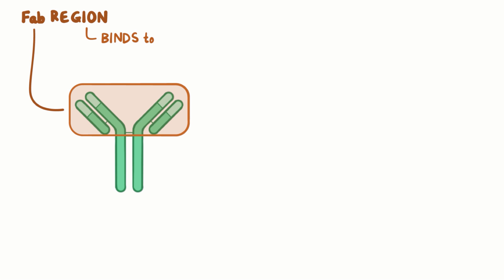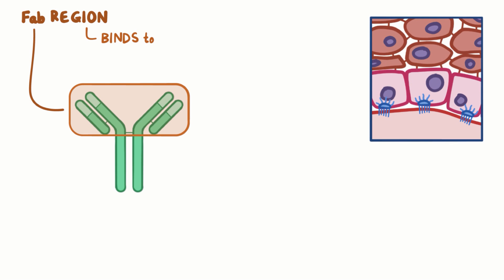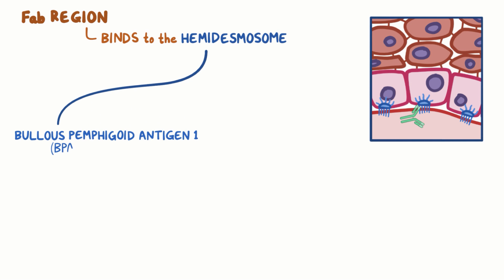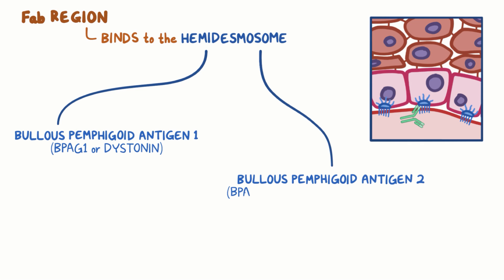In bullous pemphigoid, the Fab region of IgG antibodies binds to proteins that make up the hemidesmosome. One of the proteins is called bullous pemphigoid antigen-1, or BPAG1, which is also called distinin. Another protein is called bullous pemphigoid antigen-2, or BPAG2, which is also called BP180 or type 17 collagen — so lots of names for the same thing.